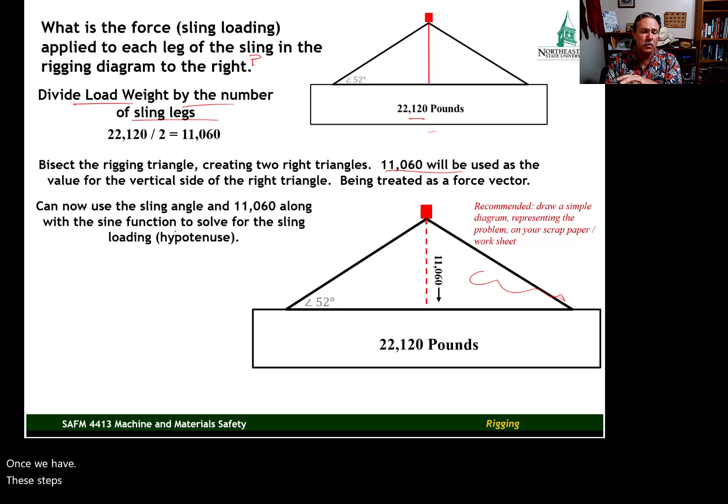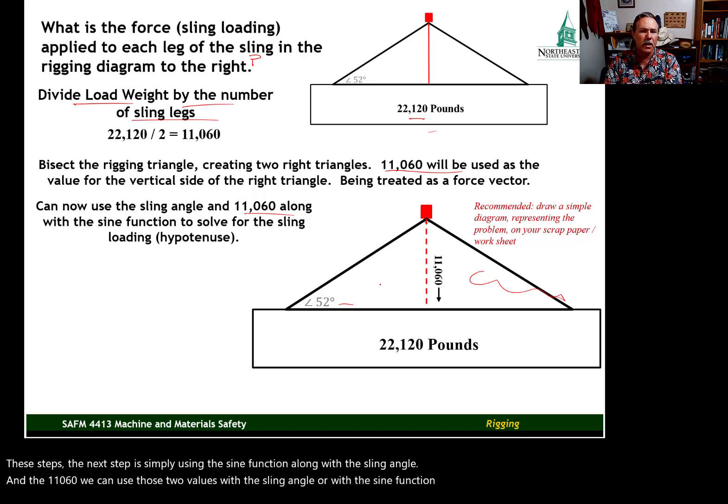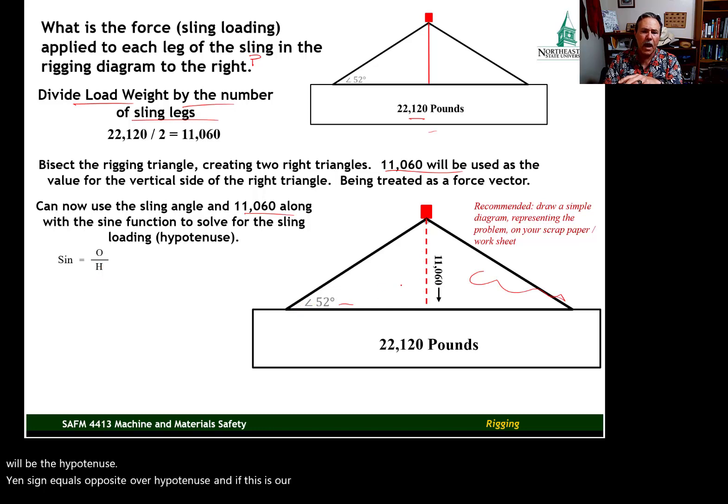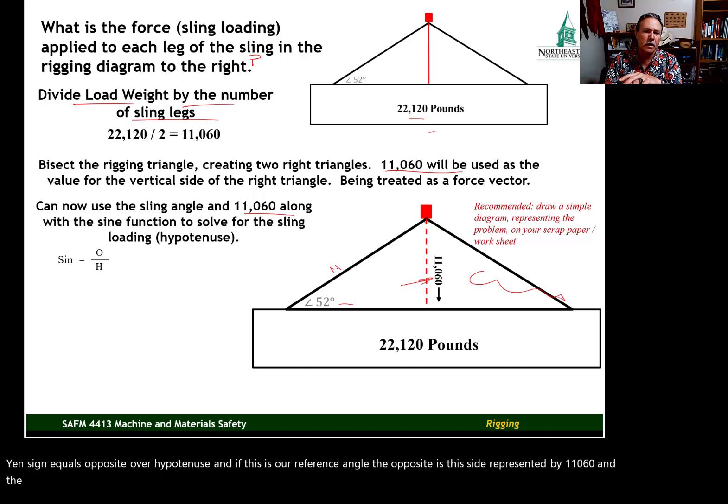Once we have completed these steps, the next step is simply using the sine function, along with the sling angle, and the 11,060. We can use those two values with the sling angle, or with the sine function, to calculate the sling loading, which will be the hypotenuse. Sine equals opposite over hypotenuse. And if this is our reference angle, the opposite is this side, represented by 11,060, and the hypotenuse is this side here.